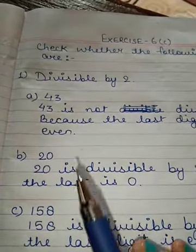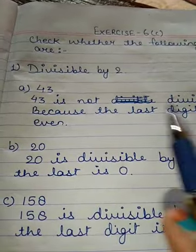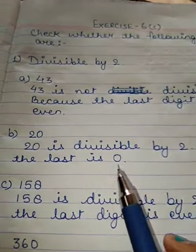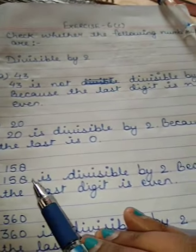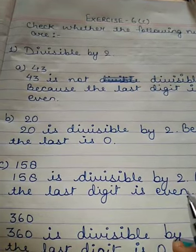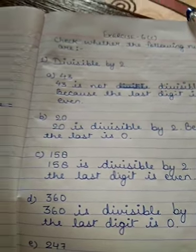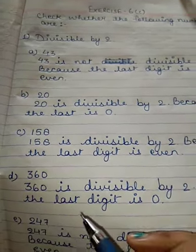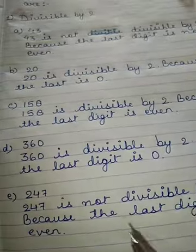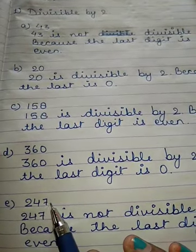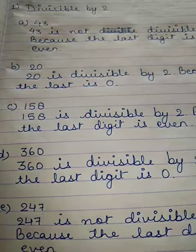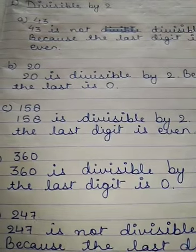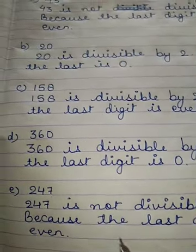Once again, let's review: 43 is not divisible by 2 because the last digit is not even. 20 is divisible by 2 because the last digit is 0. 158 is divisible by 2 because the last digit is even. 360 is divisible by 2 because the last digit is 0. 247 is not divisible by 2 because the last digit is not even — it is not the same as the digits 0, 2, 4, 6, or 8. So, this is done.